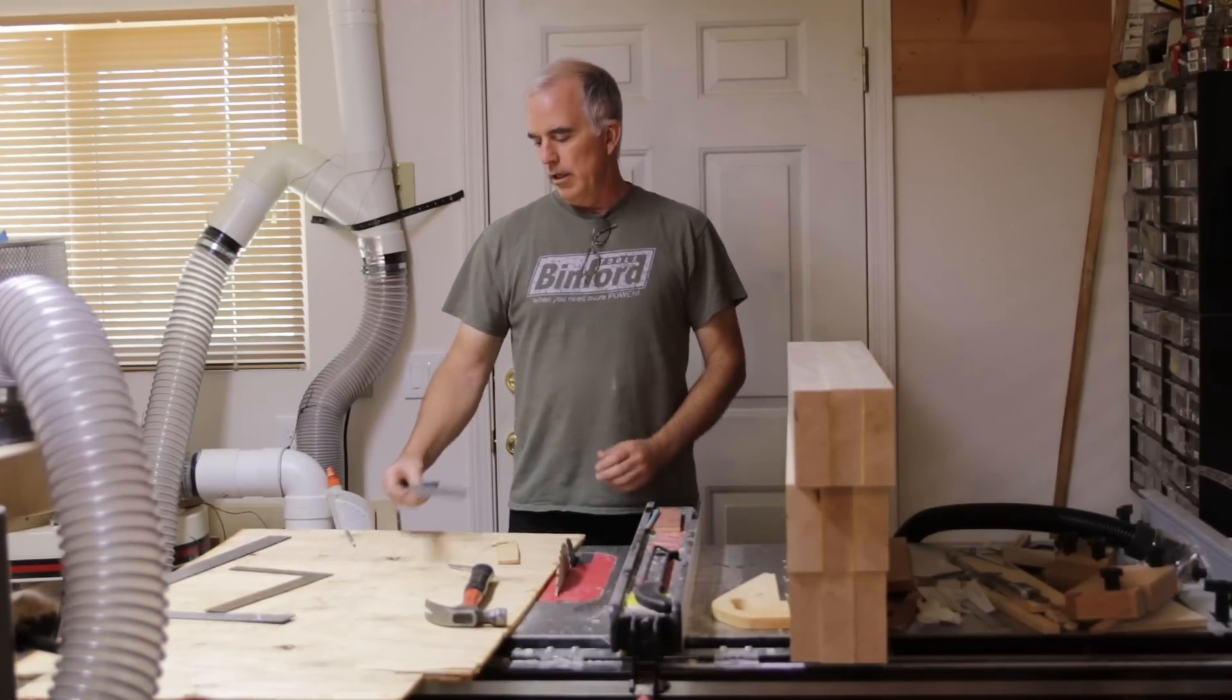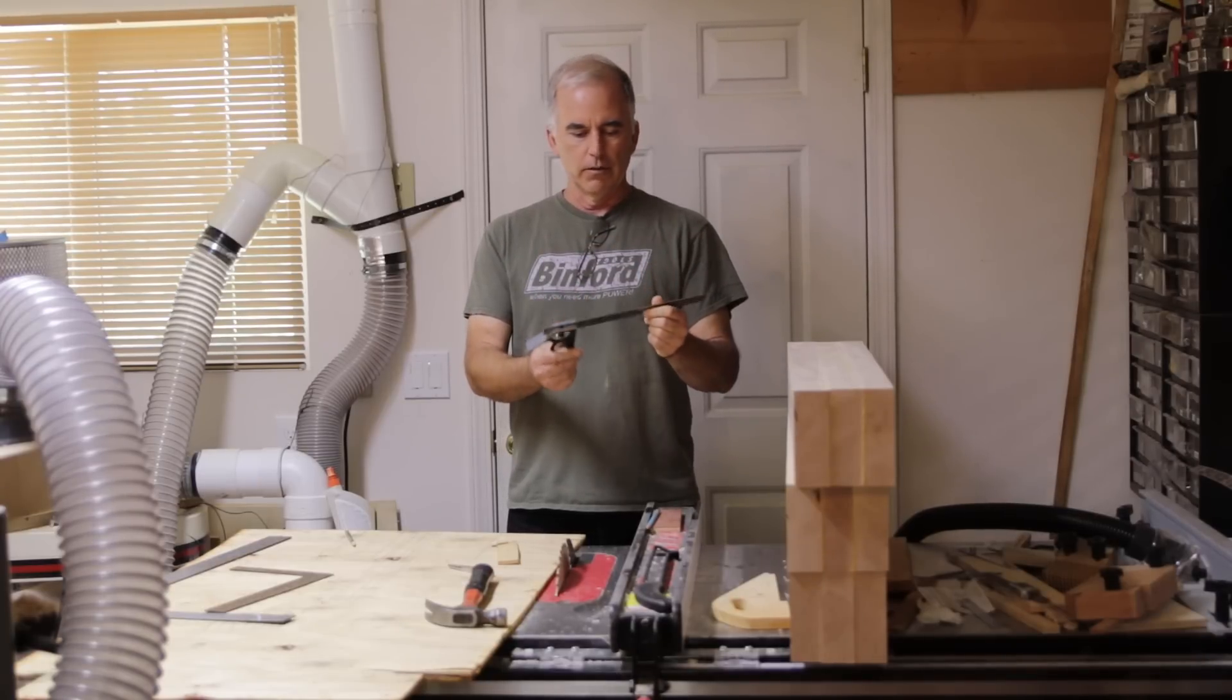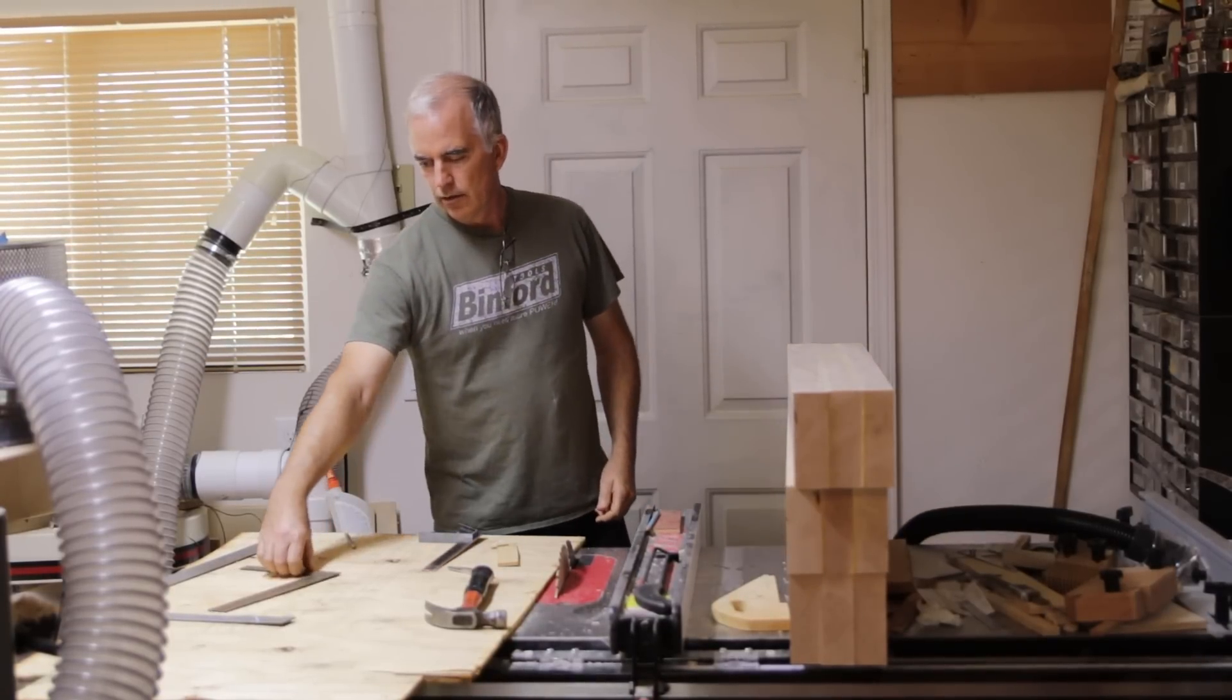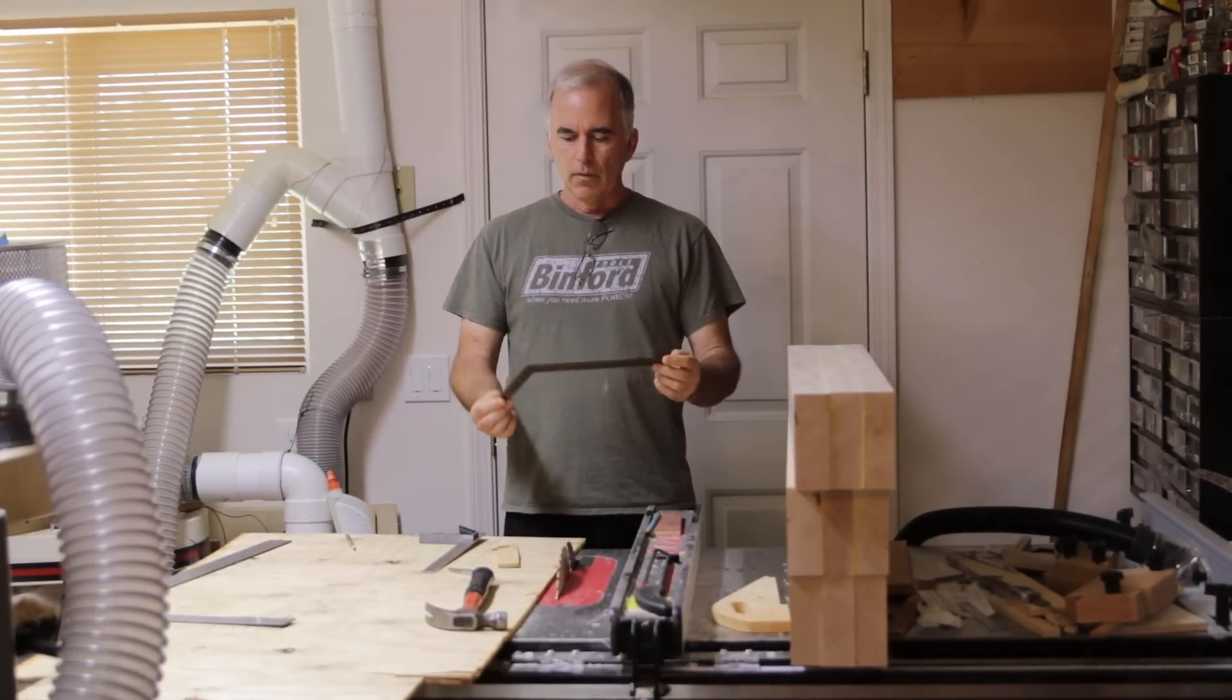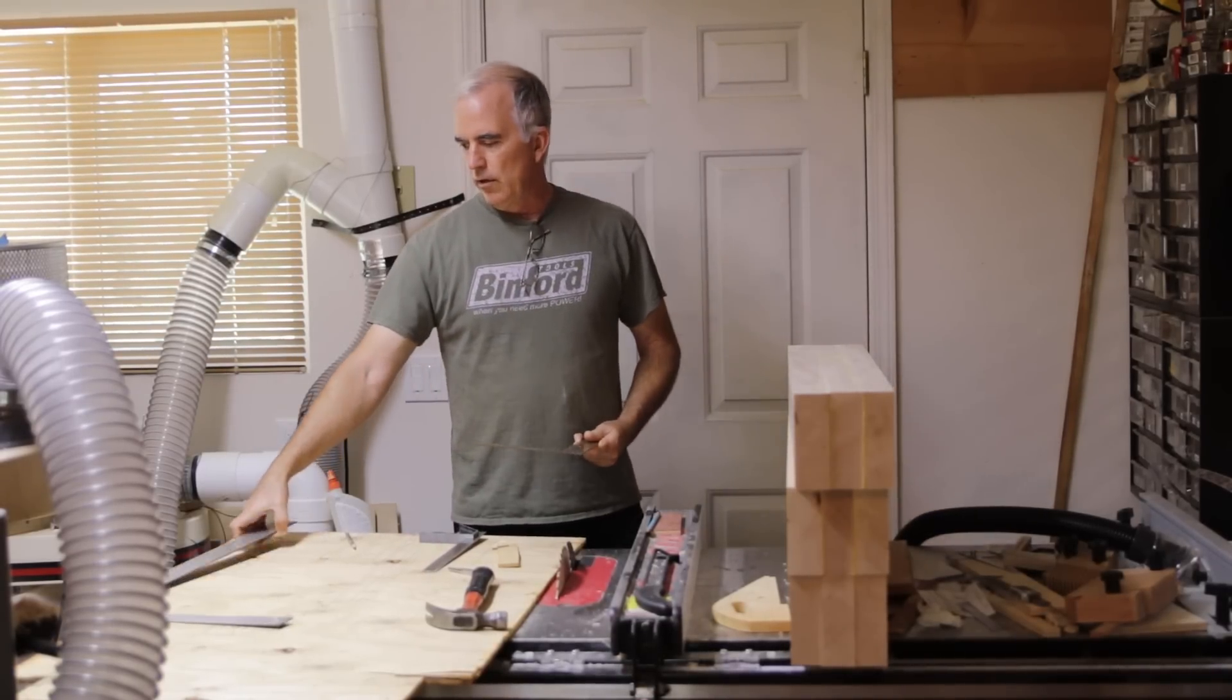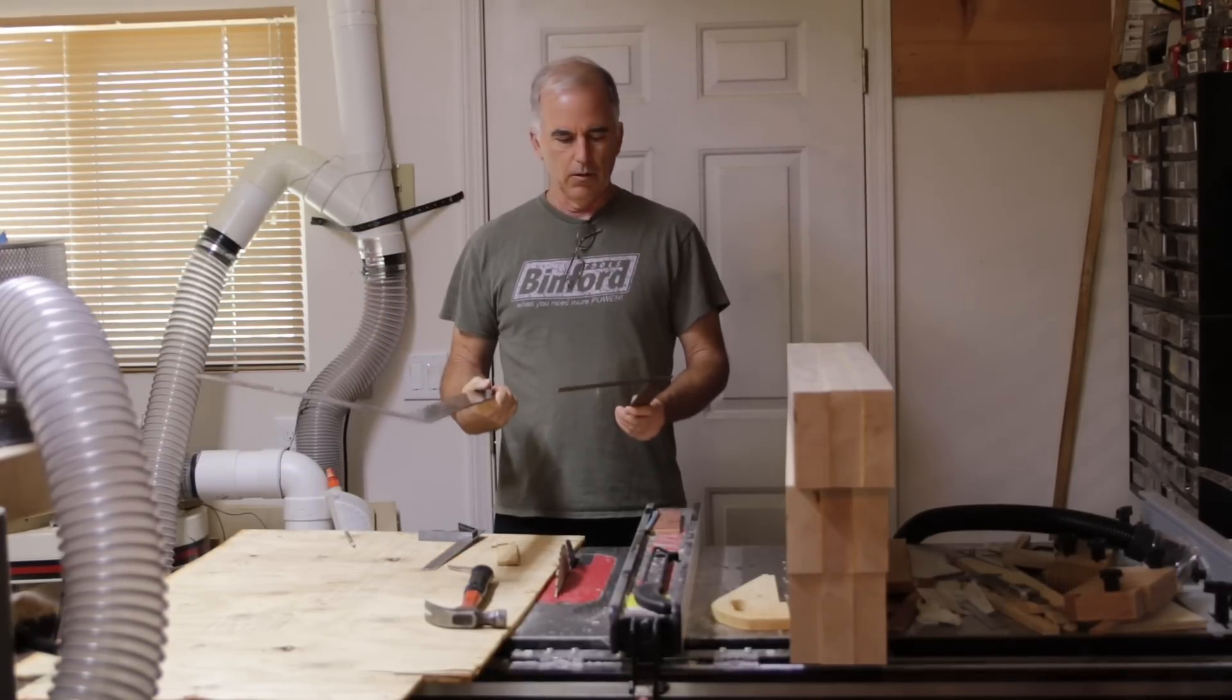So I was going to go over today how to check your combination square and how to fix it. This is just a real cheap one that I got. This is a really old Stanley framing square. And then this one's a Mayes 24 inch square. They're both fairly old.